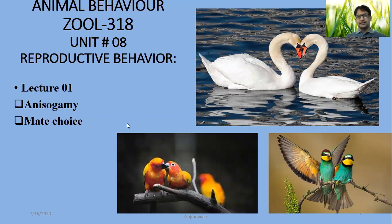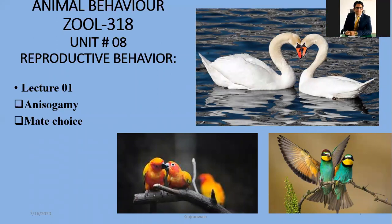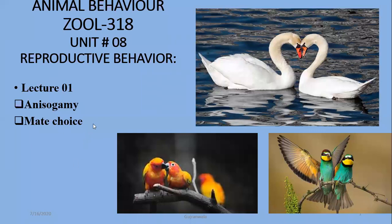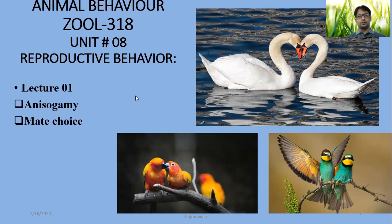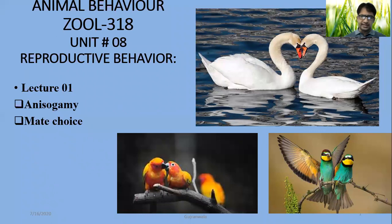Today we are going to discuss unit number 8, Reproductive Behaviour, and it will be lecture 1 of Reproductive Behaviour. We are discussing two basic terminologies, two basic questions we will cover. The first part is anisogamy — anisogamy means production of two different types of gametes in animals. And the second topic is about mate choice or sexual selection, which you have studied in the last semester.